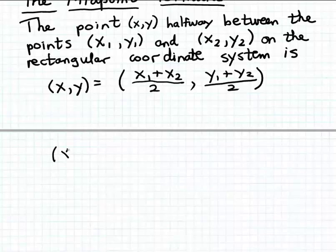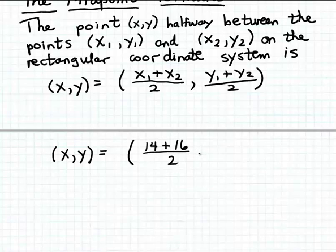We find that midpoint by averaging the x coordinates of the two given points, and we find the y coordinate of the midpoint by averaging the y coordinates of the two given points. The two x coordinates are 14 and 16, so we add those together and divide by 2. The two y coordinates are 11.1 and 13.9, so we add those together and divide by 2.